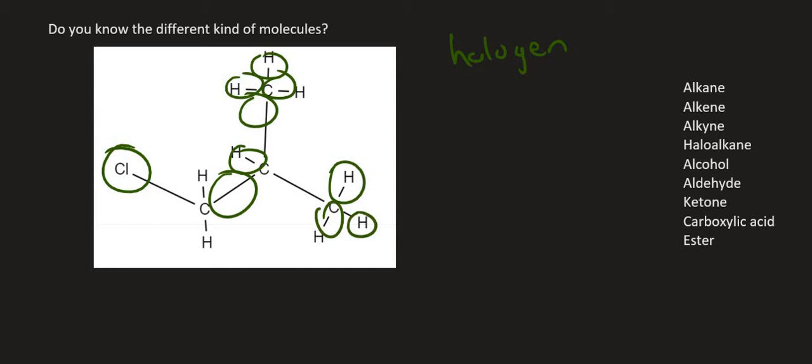Okay, so those single bonds is usually an alkane. So what do you get when you mix halogen and alkane? You get haloalkane, and so that's this one over here.